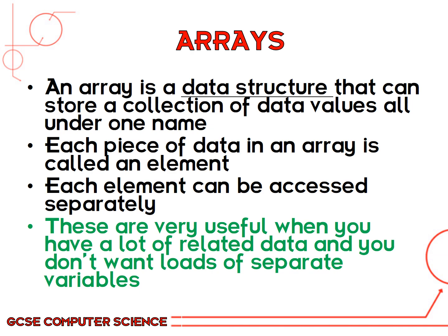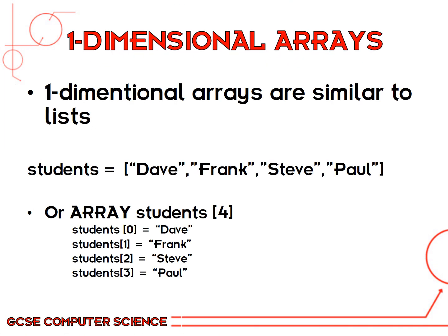One of the easiest ways to get your head around arrays is to think of them like the lists that you might have created in Python. So if you look at this example here — students equals Dave, Frank, Steve, Paul in square brackets — like you might create a list in Python, this could be set out as an array in other programming languages. Here, array students 4 is setting up a data structure called an array with the name students, saying that there are four elements inside the array.